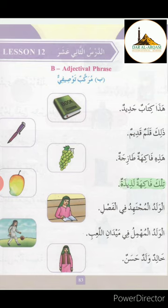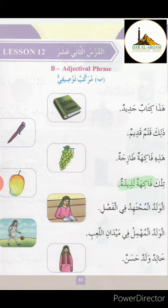تِلْكَ فَاكِهَةٌ لَذِيذَةٌ. تِلْكَ means 'that' and is used for female words. فَاكِهَةٌ — the last letter is ta marbuta, so this is a female word. لَذِيذَةٌ means 'tasty' or 'delicious'. فَاكِهَةٌ لَذِيذَةٌ means 'tasty fruit' or 'delicious fruit'. تِلْكَ فَاكِهَةٌ لَذِيذَةٌ — That is a delicious fruit. فَاكِهَةٌ is mausuf and لَذِيذَةٌ is shifat.